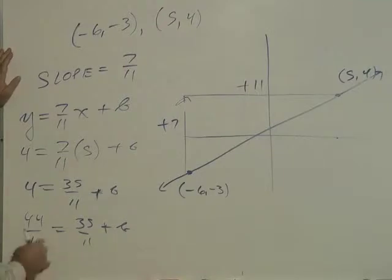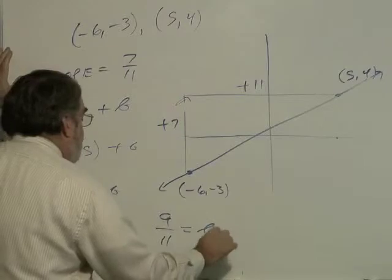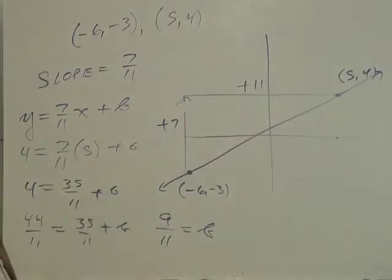Now 4 is 44 over 11. So if I subtract 35 over 11 minus 35 over 11 gives me 9 over 11 for b, which is around 1, close to 1. So that looks like it's going to be correct.